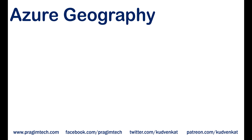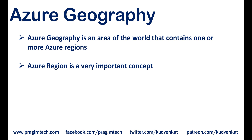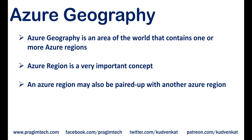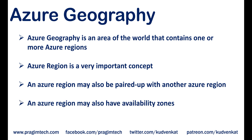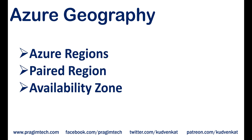In simple terms, an Azure geography is an area of the world that contains one or more Azure regions. Azure region is a very important concept because every time you create an Azure resource — like a virtual machine, for example — you need to specify the region where you want that resource to be created. An Azure region may also be paired up with another Azure region, and there are several benefits of this pairing. An Azure region may also have an availability zone. These concepts of regions, paired regions, and availability zones are very important and we'll discuss them in detail in our upcoming videos.